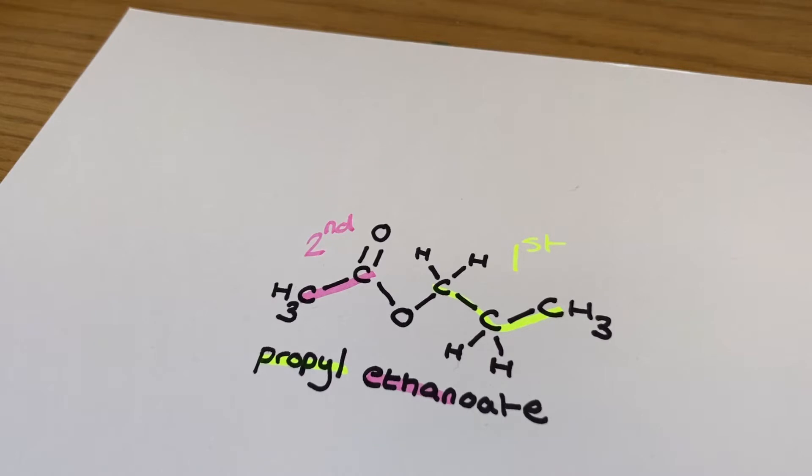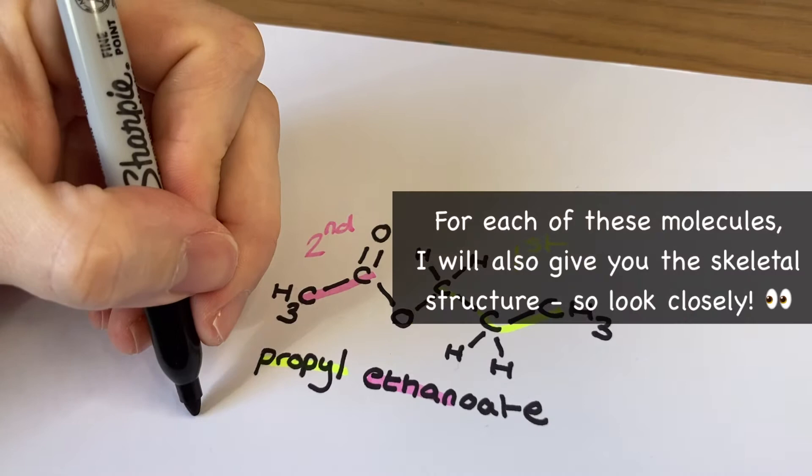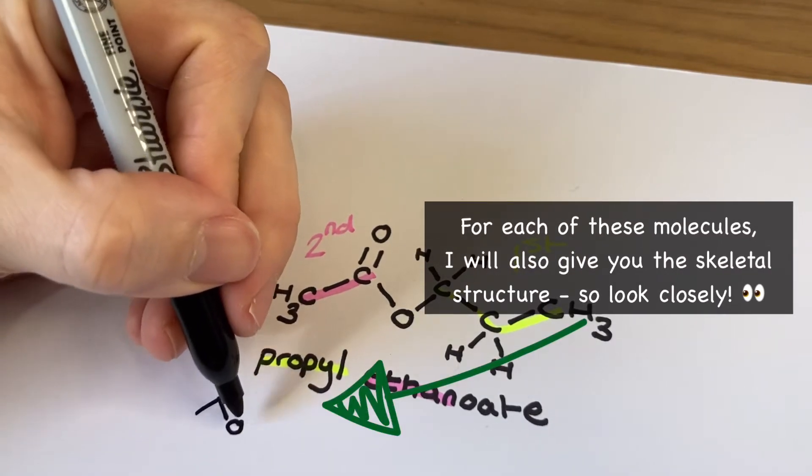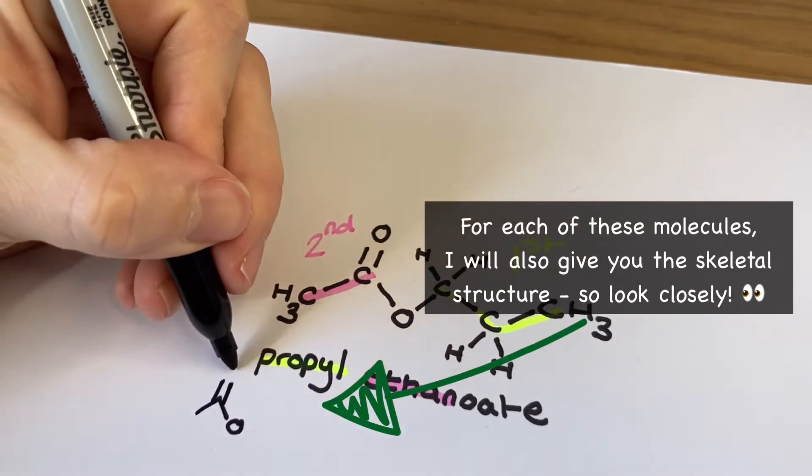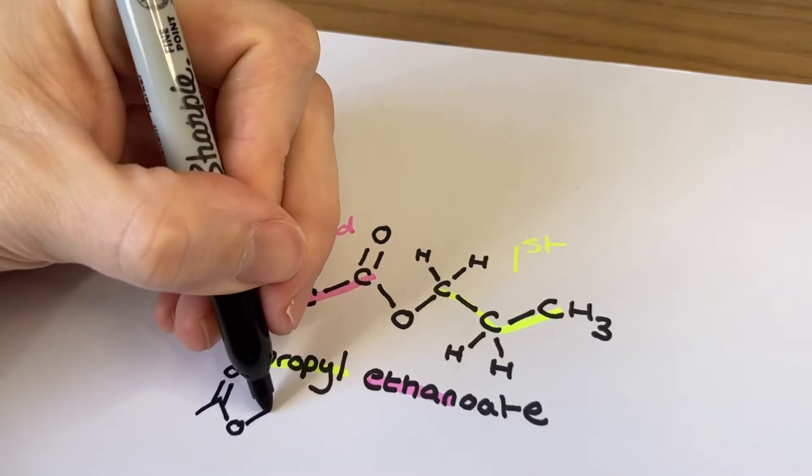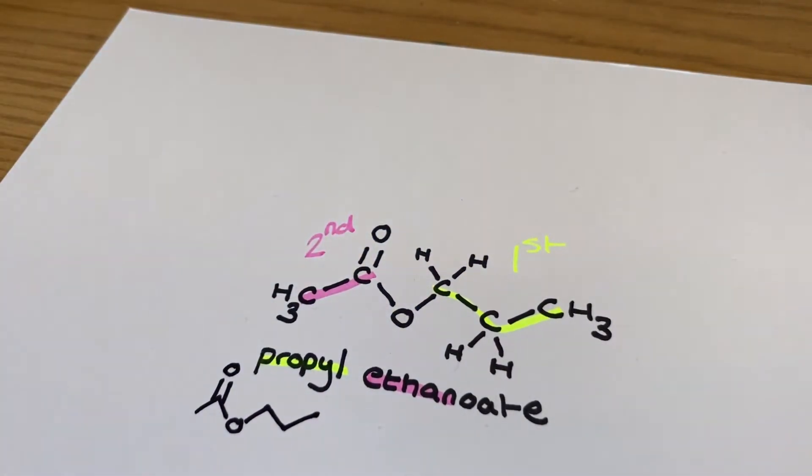To help you remember which goes first, take a close look at the ester functional group and you'll see that there's a single bond to oxygen section and a double bond to oxygen section. I like to remember it as the single bond oxygen section goes first, and then the double bond oxygen section goes second, all the time following the pattern of alkyl alkanoate. The three carbon section followed by the two carbon section here gives us the name propyl ethanoate.